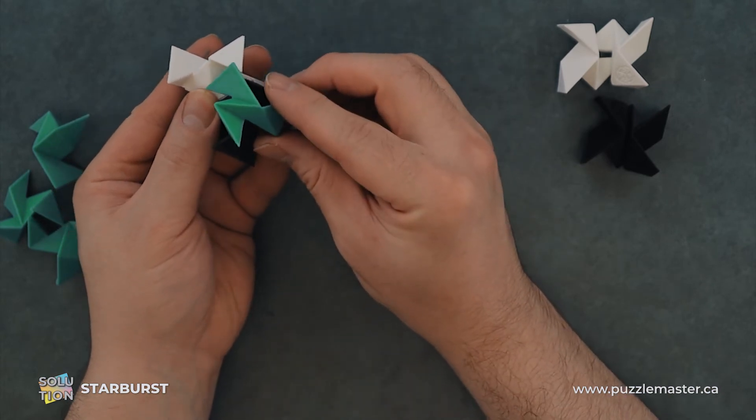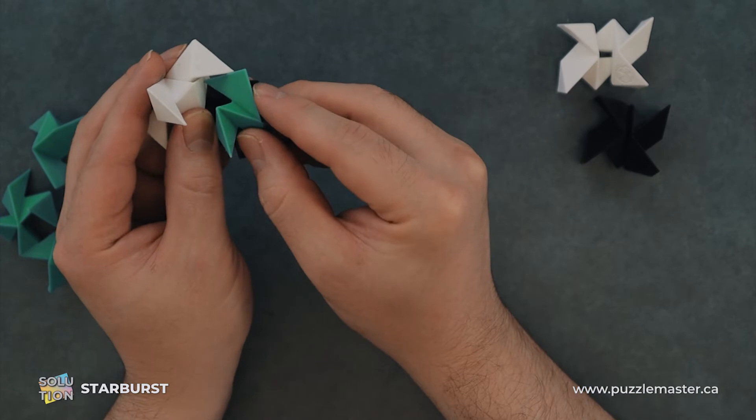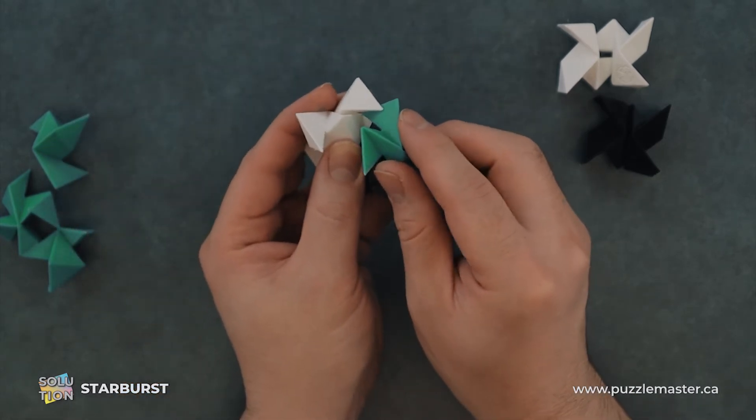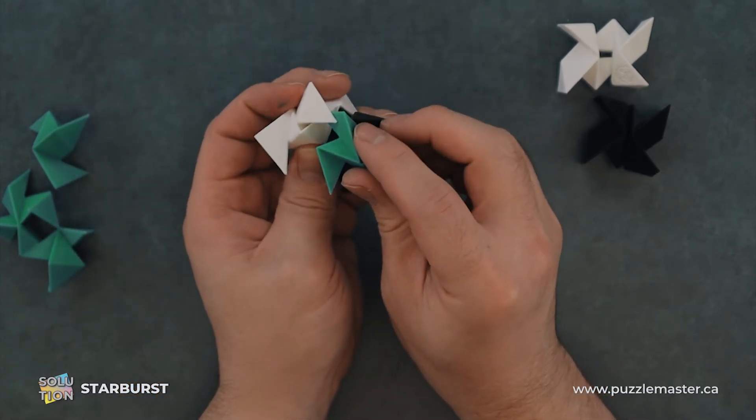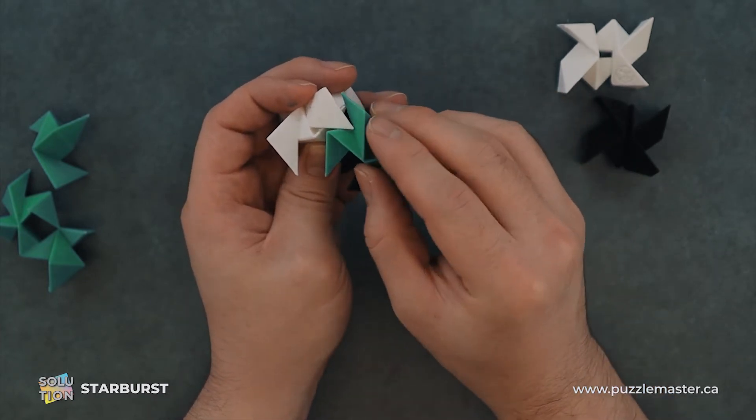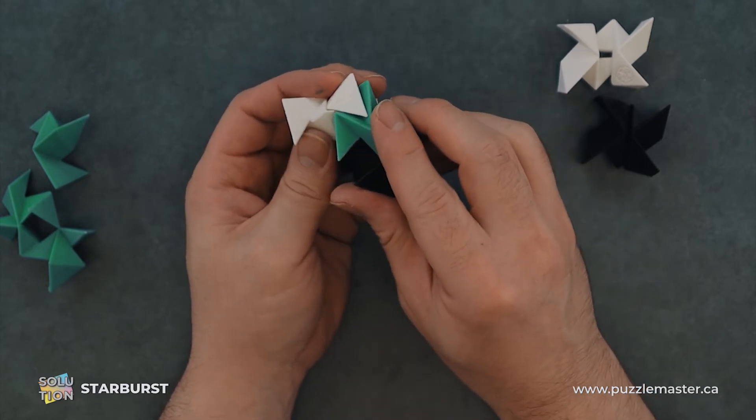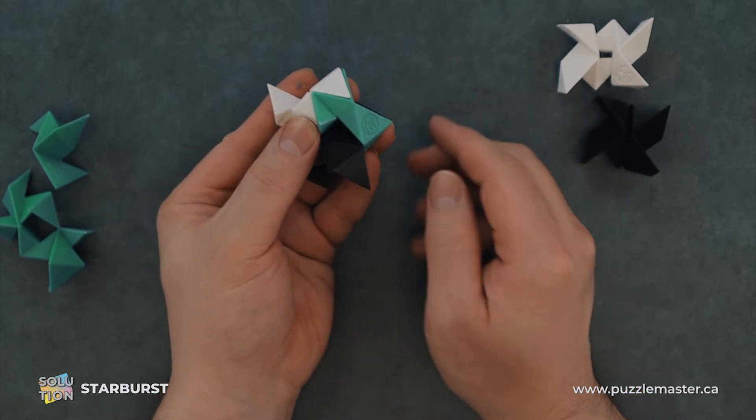So the logo will end up being here and this will go behind. So we just kind of splay out some of these pieces, whatever works. Just kind of fit that in there and it will go like so.